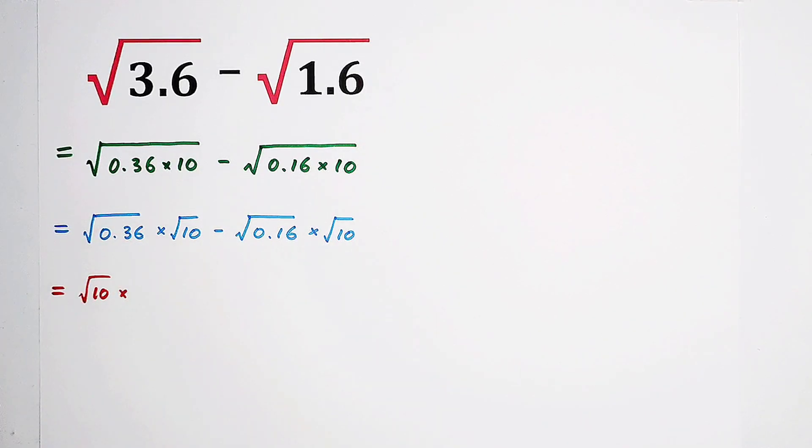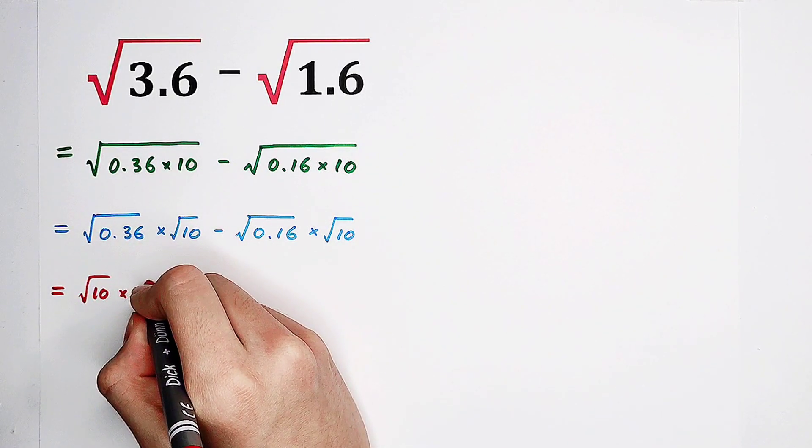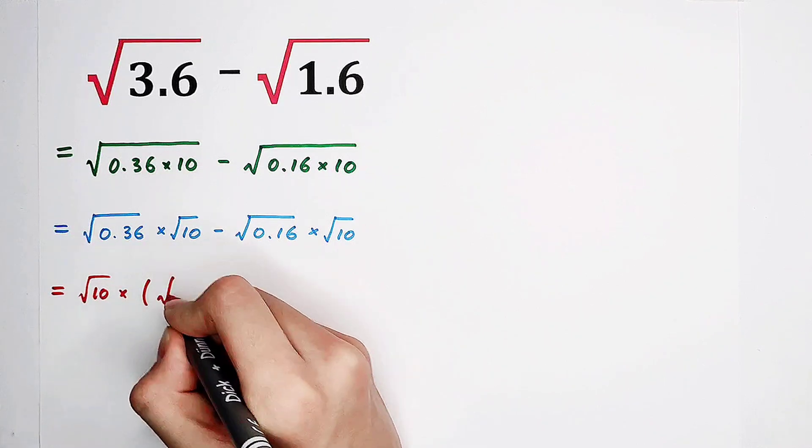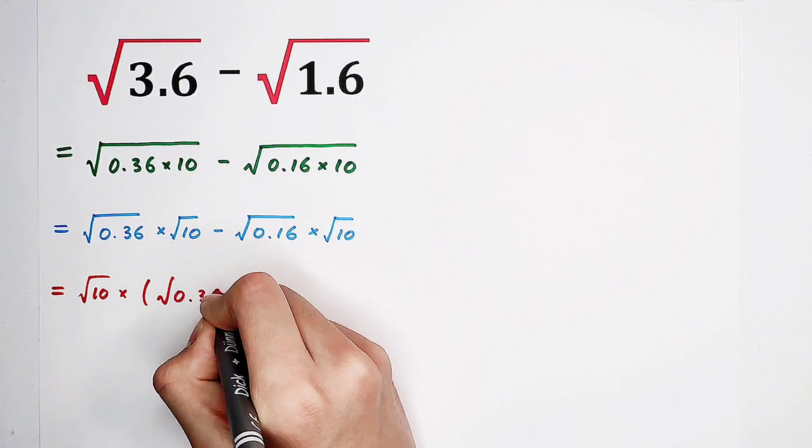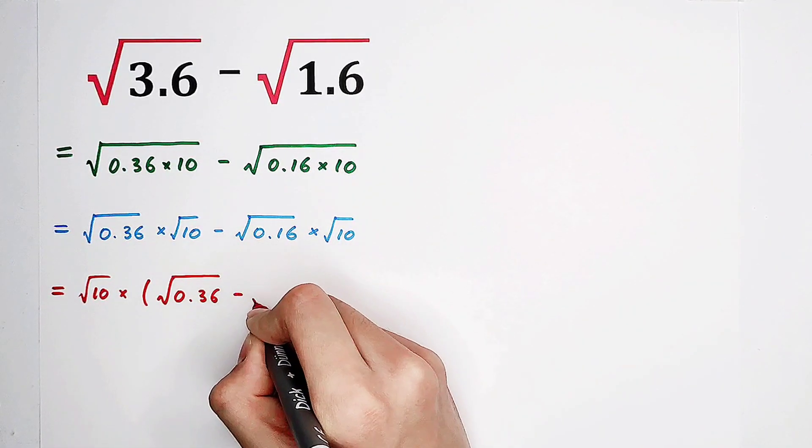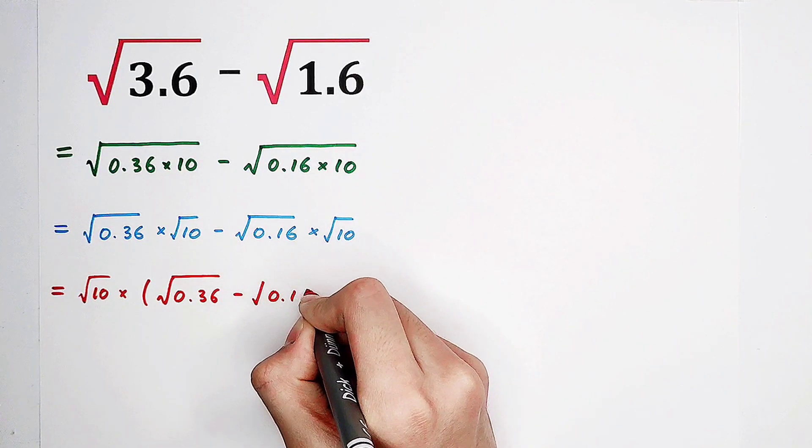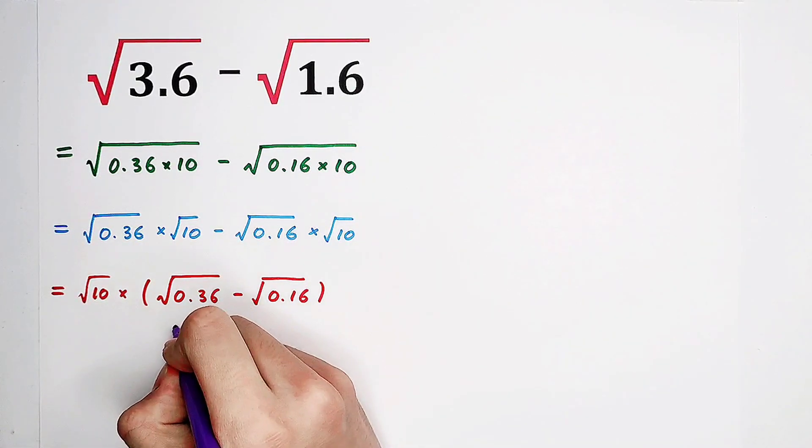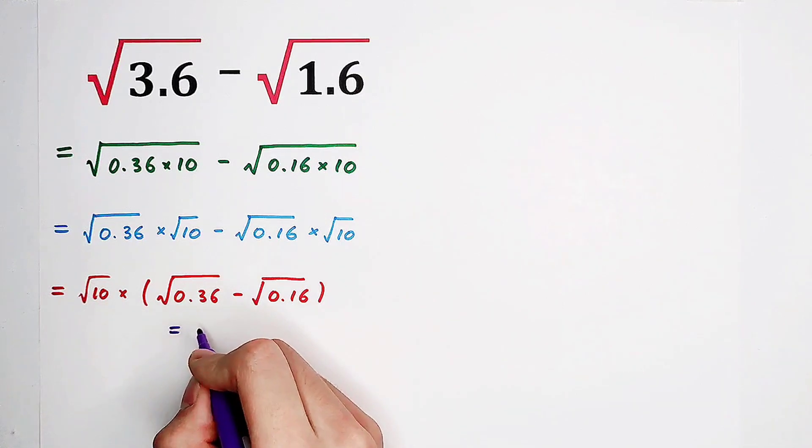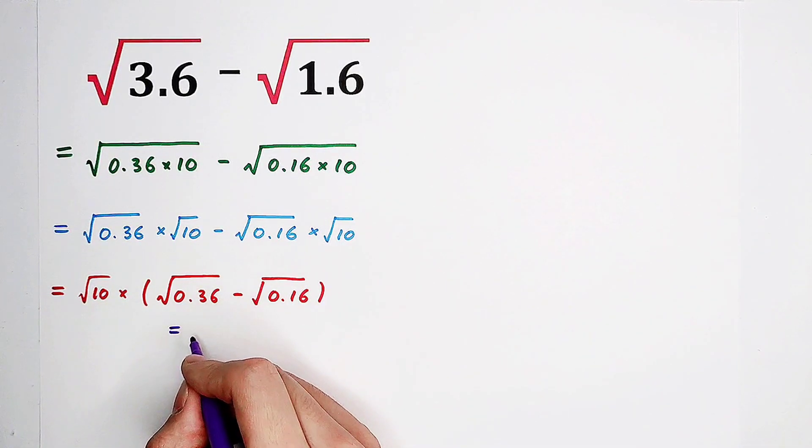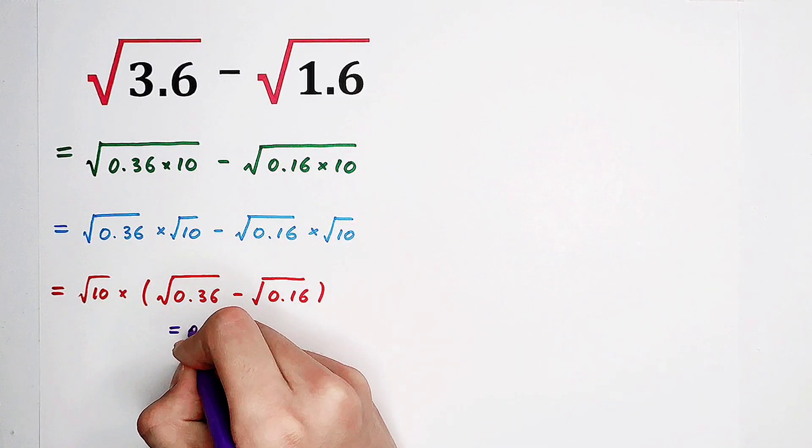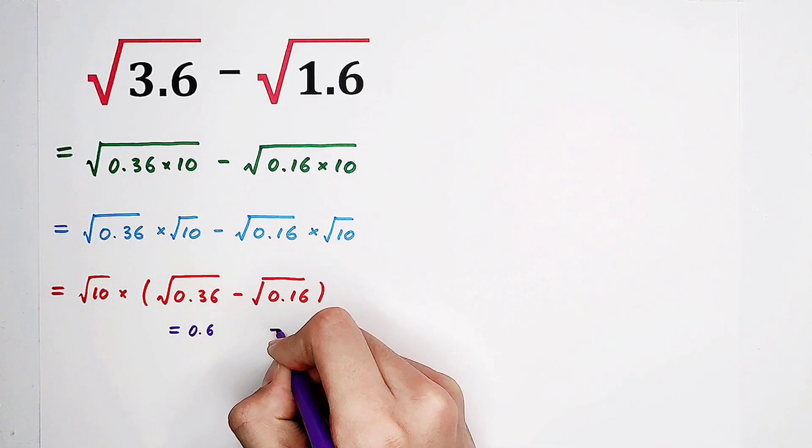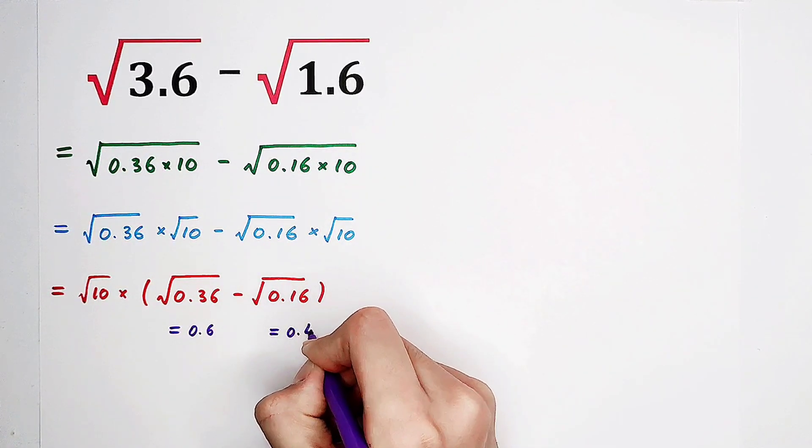Square root of 10 times in the bracket, square root of 0.36 minus square root of 0.16. Now, we're going to calculate these. Square root of 0.36 is 0.6, and this is 0.4.